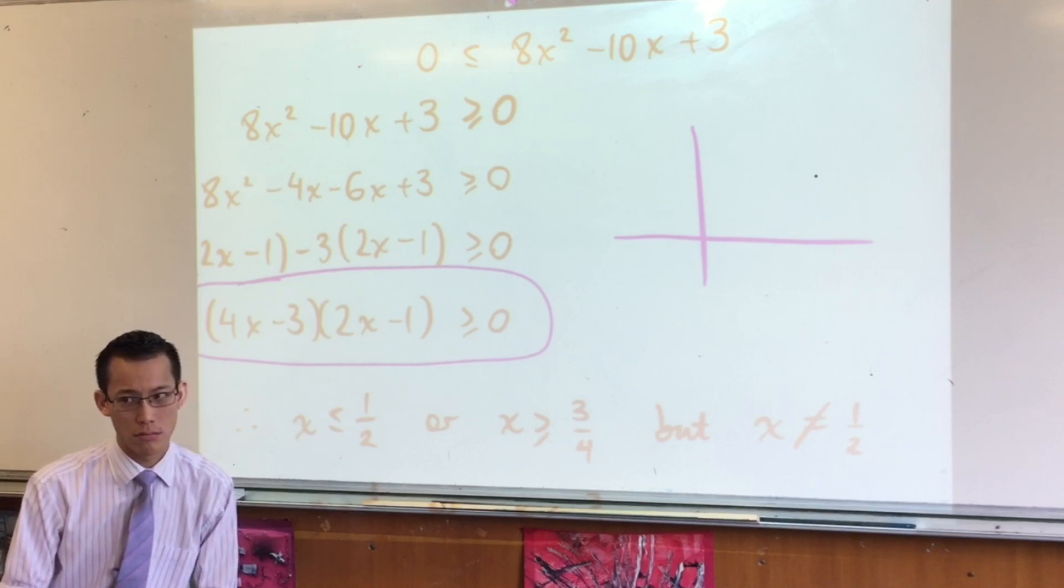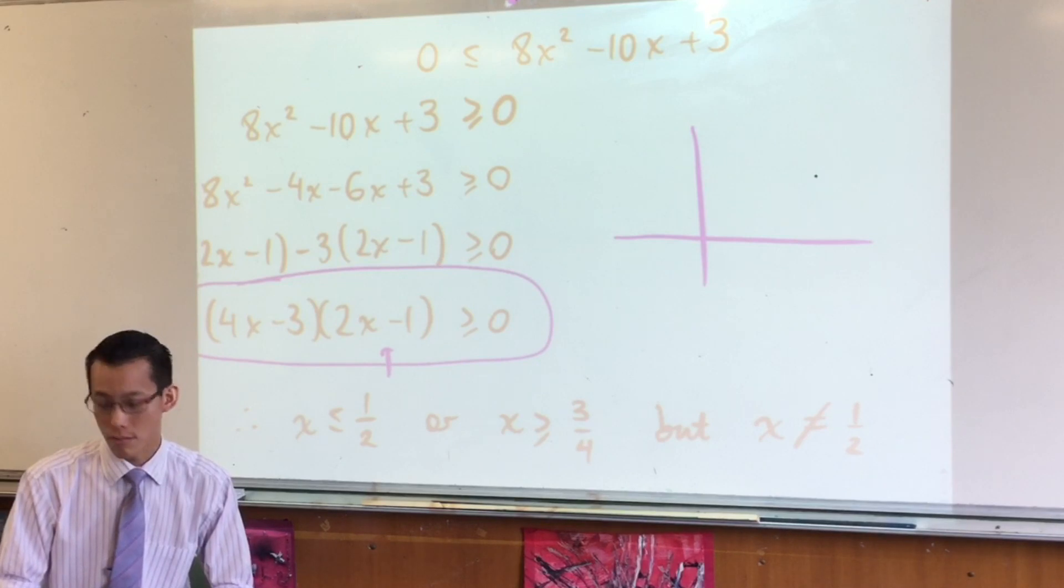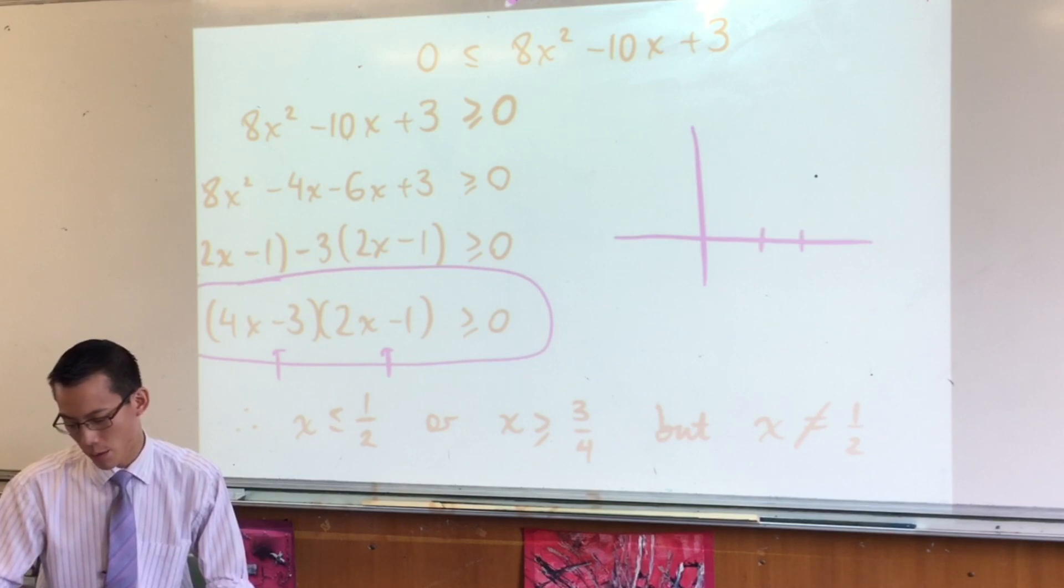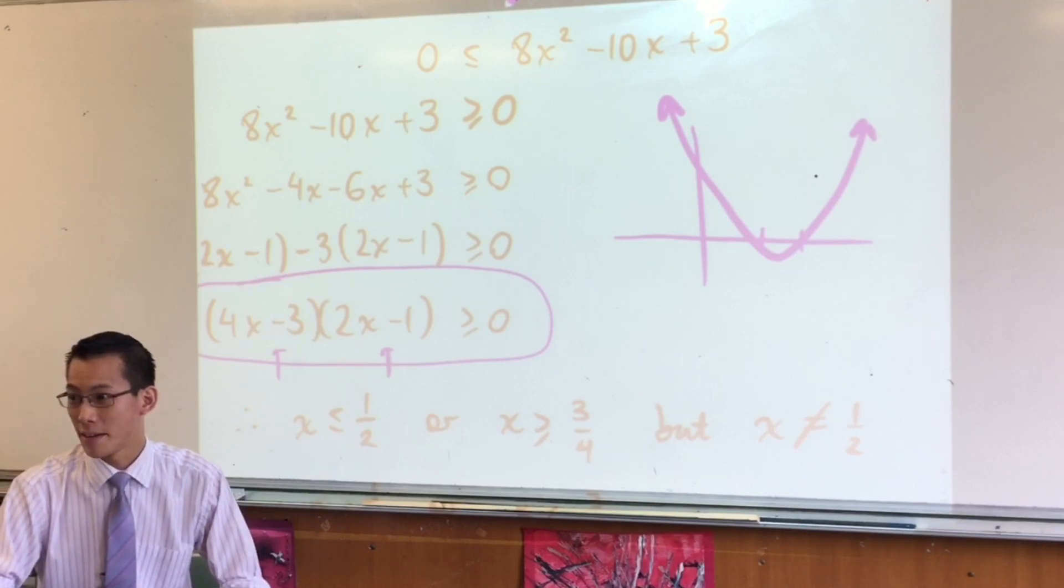Can you tell me what the roots are? From this you get a half, and from this you get three quarters. Do you agree? So I'm just going to put a half there, and three quarters there. So this is what the parabola looks like.